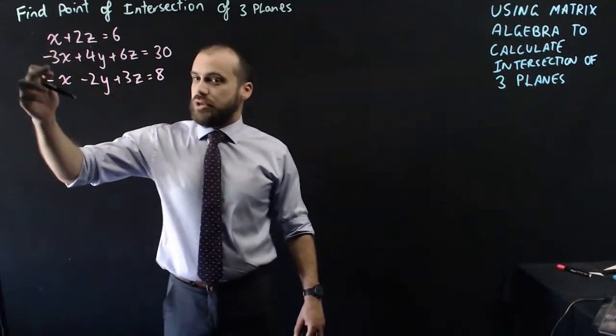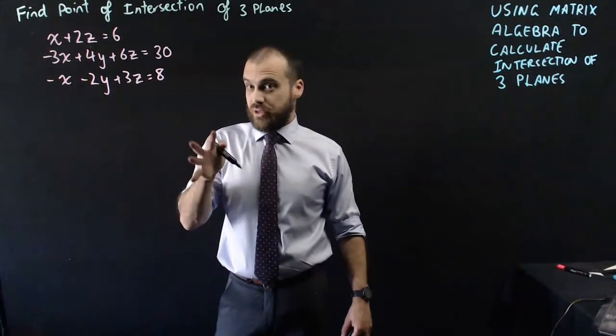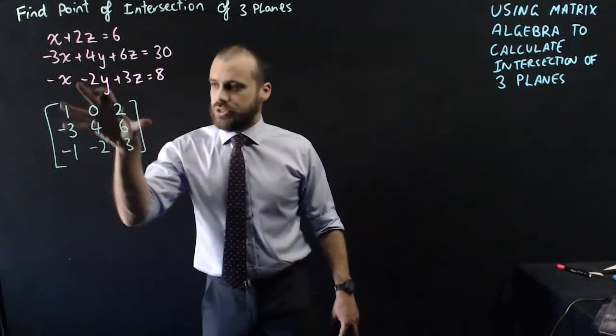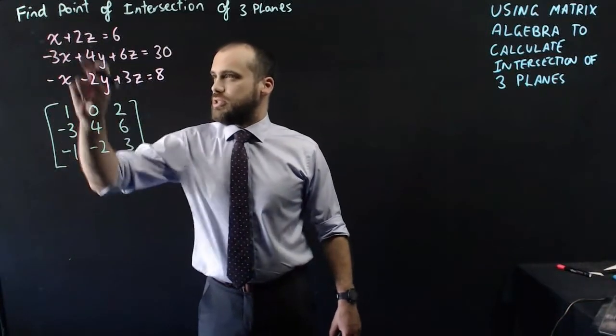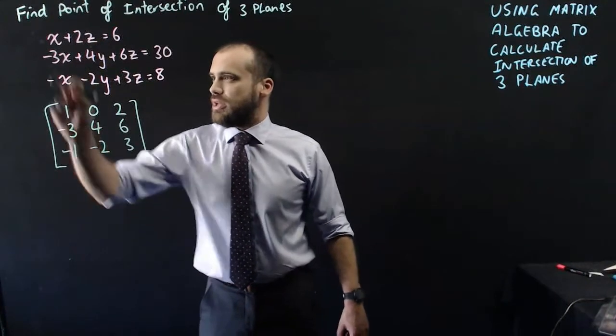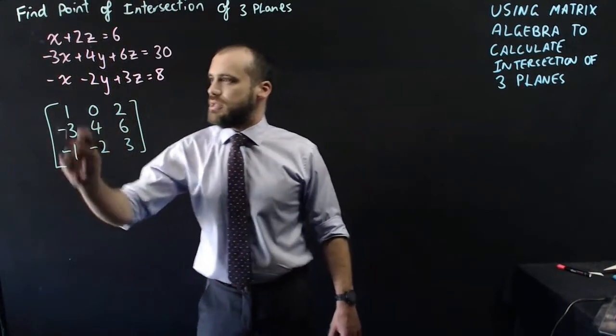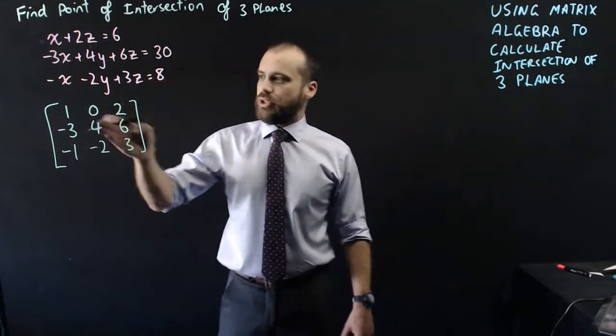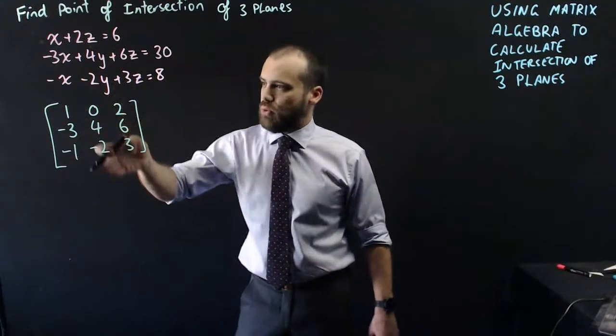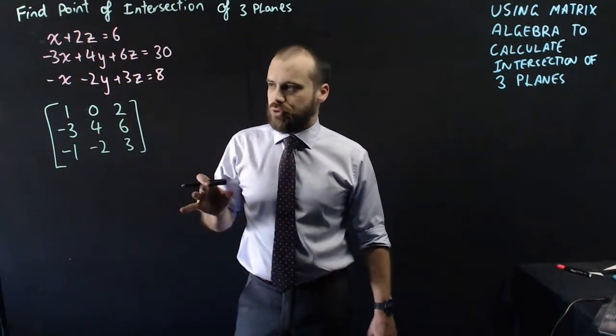Now we can write these three equations into a matrix. So I've taken all of the coefficients and placed them in this matrix: 1x, 0y, 2z, negative 3, 4, 6, negative 1, negative 2, 3. Make sure that you put all your x's here, all of your y's here, all of your z's here, even if they're written in a different order.